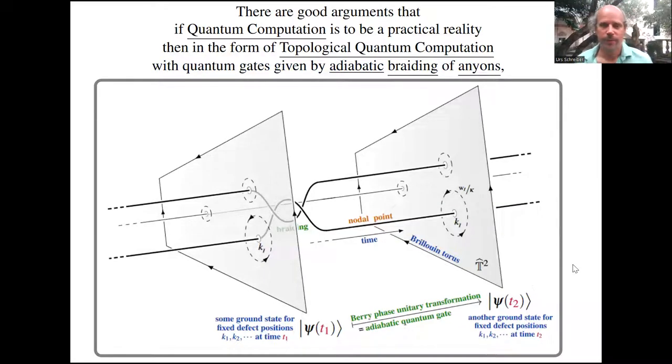This is shown in the following schematic picture. You imagine that in the laboratory you can realize an effectively two-dimensional material, maybe like graphene, whose quantum ground state depends on the position of certain point defects, but depends on these positions only topologically, actually homotopy theoretically, meaning it does not depend on little deformations but does depend on global topological manipulations.